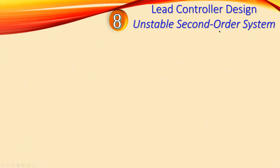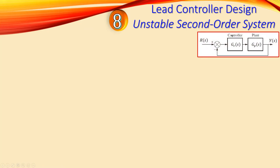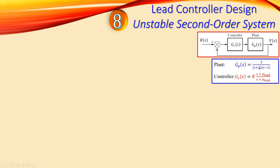What we have is a second-order system which is already unstable, and we would like to design a lead controller for that using the root locus method. We have the controller in cascade with a plant and there is a unity gain feedback configuration. R is our input and Y is our output. The plant is 2 over (s+3)(s-1). The pole at +1 is in the right half plane, making it an unstable pole.